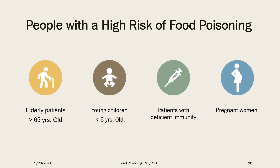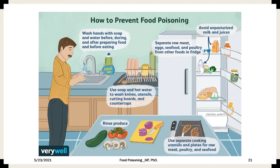People at high risk for food poisoning include elderly patients due to decreased immunity and organ failure, young children due to immature immunity, immunocompromised patients or those receiving corticosteroid treatment, and pregnant women. Some preventive advice was also presented. And with that we come to an end — thank you so much for listening today and good luck.